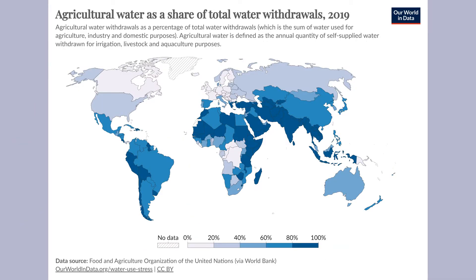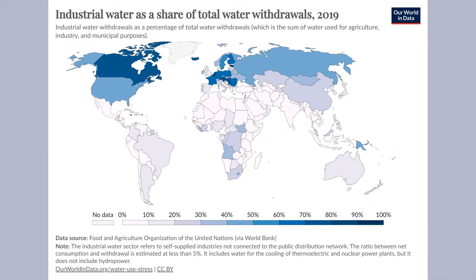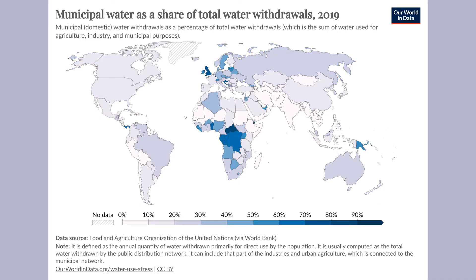When it comes to the three types of water use, this is a really good source to look at: agriculture, industry, and municipal — which is basically domestic use. Looking at those three data sets, I'll give you the link in the comments. Click on the country of your choice, and you can build that little drip to show the percentages that go to industry, domestic, and agriculture.